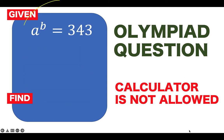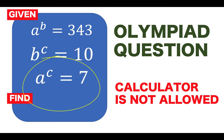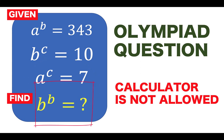Here's our problem for today. We are given A raised to B is equal to 343, B raised to C is equal to 10, and A raised to C is equal to 7. We would like to find the value of B raised to B, and you are not allowed to use a calculator.